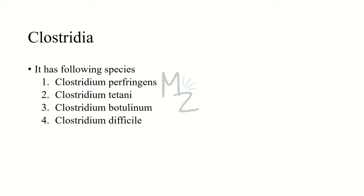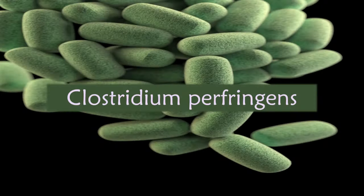Clostridia. It has four important species: Clostridium perfringens, Clostridium tetani, Clostridium botulinum, and Clostridium difficile. Assalamu alaikum everybody. Today we'll be talking about Clostridium perfringens in detail.